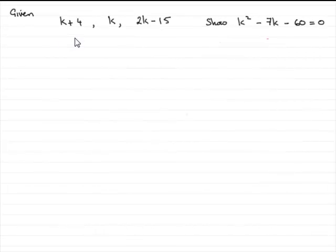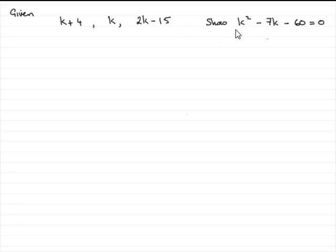In this question, we're given the first three terms of a geometric series: k plus 4, k, and 2k minus 15. We've got to show that k squared minus 7k minus 60 equals 0.